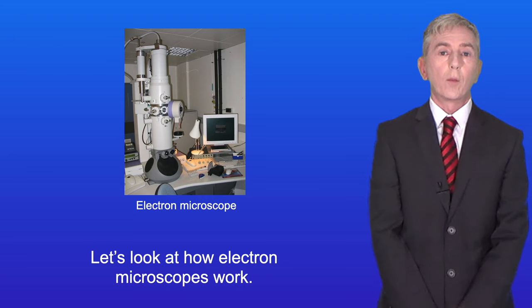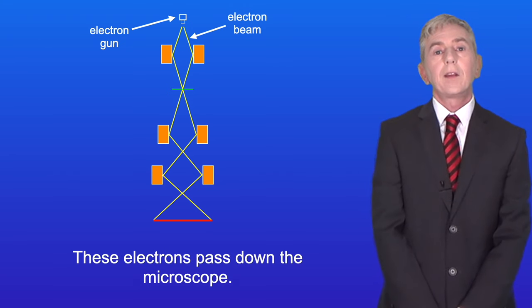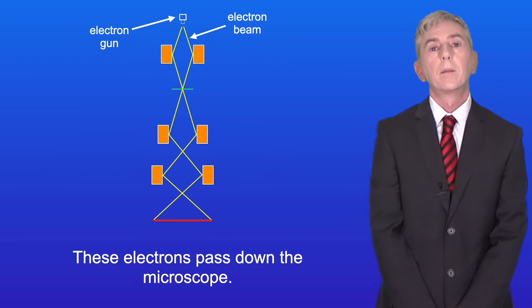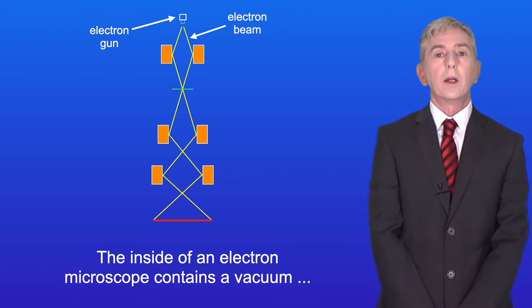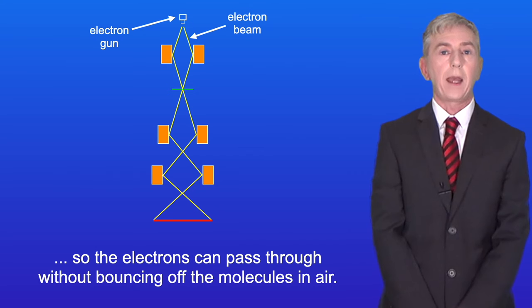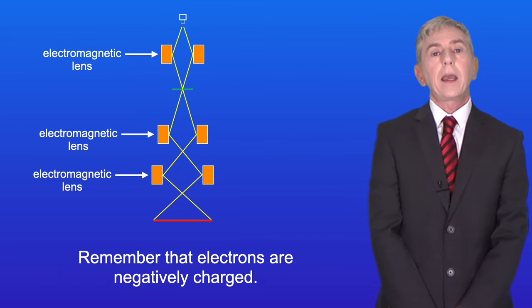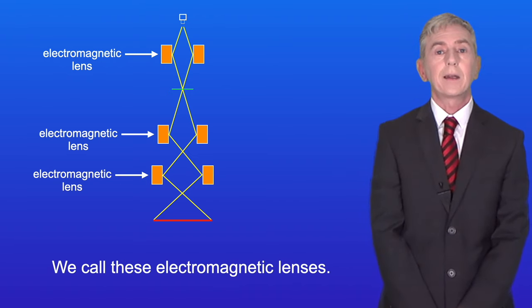Let's look at how electron microscopes work. We start with an electron gun producing a beam of electrons that pass down the microscope. The inside contains a vacuum so the electrons can pass through without bouncing off air molecules. Remember that electrons are negatively charged. This means we can focus the electron beam using electromagnets, which we call electromagnetic lenses.